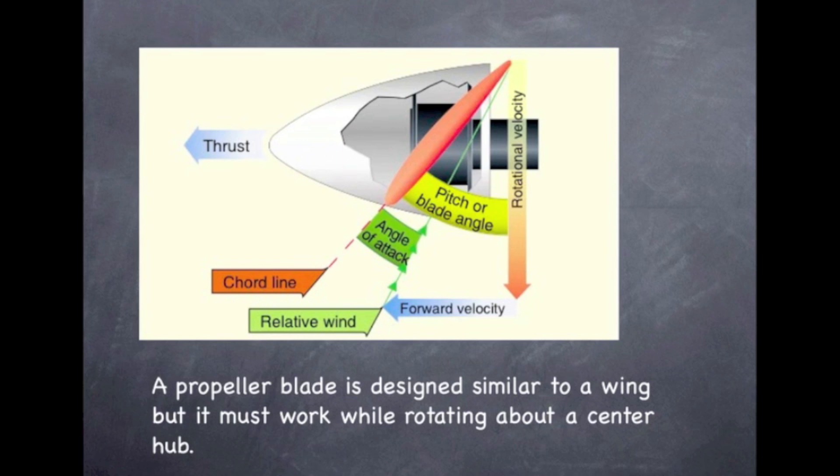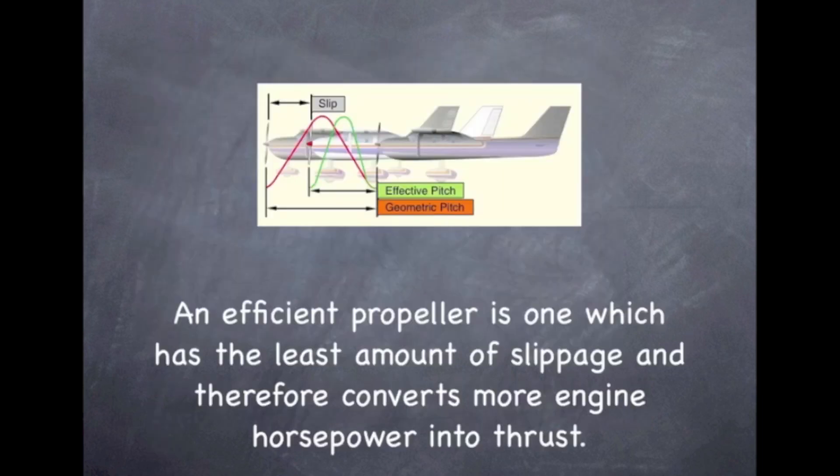The blade angle is a measurement of the distance between the propeller chord and the plane of rotation, which is fixed in one position on most airplanes. When we speak about propellers, we don't talk about the blade angle, we talk about the pitch of the propeller. Propeller pitch is the distance in inches which the propeller would screw through the air in one rotation.